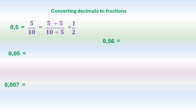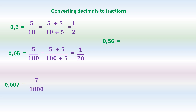For 0.05: there are two digits after the comma, so the denominator is 100. The figure after the comma is 5, so it's 5 over 100. Dividing both by 5 gives 1 over 20. So 0.05 equals 5 over 100, which also equals 1 over 20 — these are equivalent fractions. For 0.007: there are three digits after the comma, so the denominator is 1000 and the numerator is 7. 7 over 1000 cannot be simplified, so we write it as 7 over 1000.